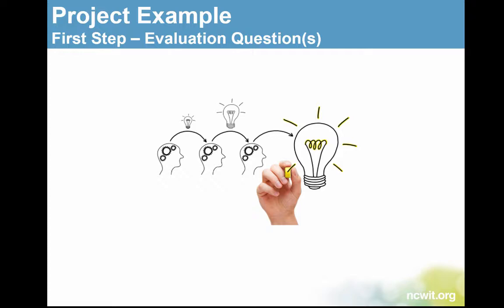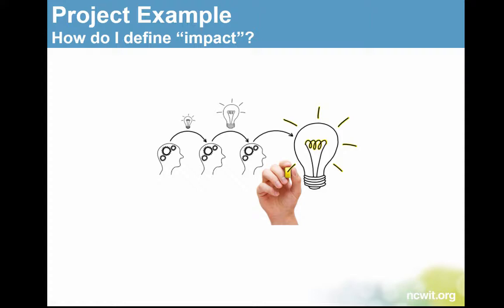The first thing I should do is develop evaluation questions to guide the evaluation. In general, with every project we probably all want to know what is the impact of the program on the participants and did impact differ for different types of participants. So what is impact? How should we define it for this evaluation? Some examples include enjoyment, computer science skills, interest in continuing to take computer science courses, wanting to come back to your program, understanding what it means to do computing as a career, feeling like they belong in computing, or something else. For this scenario I'm going to define impact as interest in computing and confidence in computing. So I want to find out if the participants' interest in computing and confidence in computing changed for the positive after attending my program.